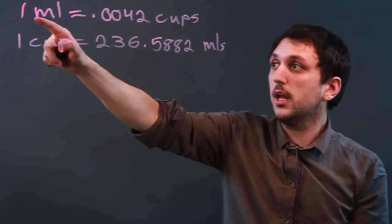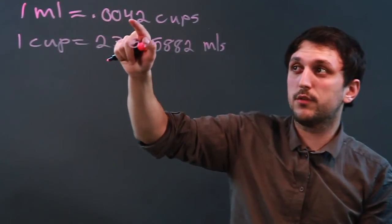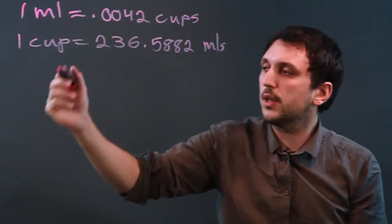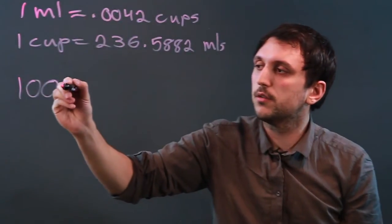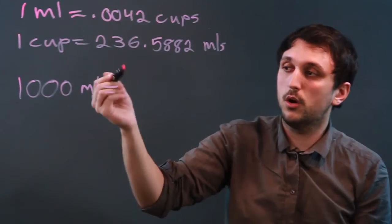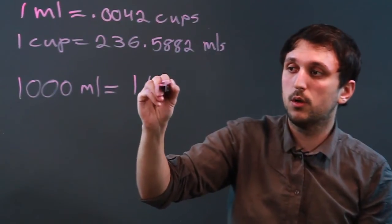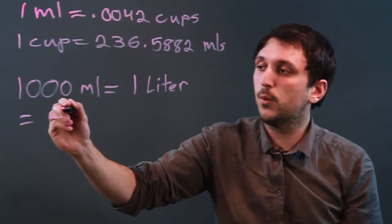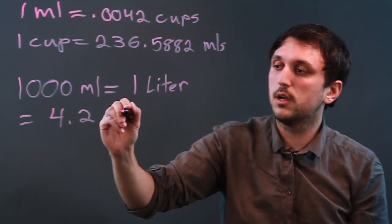Now, if we have one milliliter and we have .0042 cups, that's a very small amount of cups. But if you think about it, 1,000 milliliters equals also one liter, which is a larger measurement of volume in the metric system, which equals 4.2 cups.